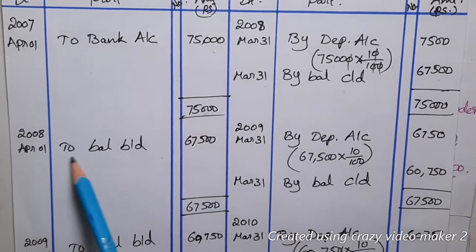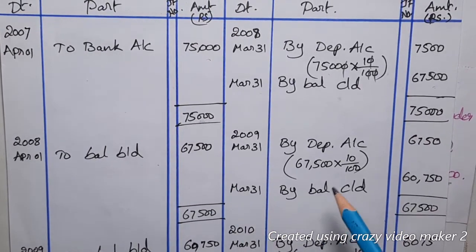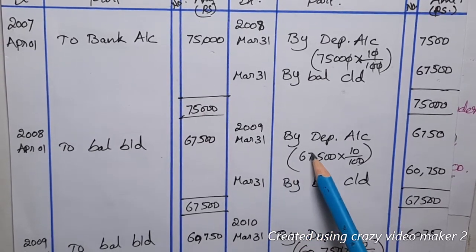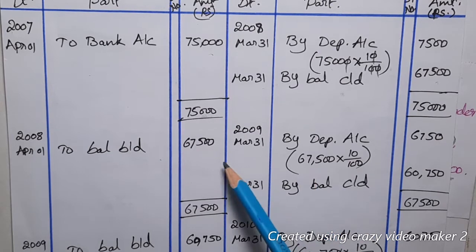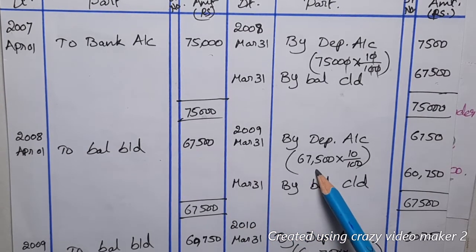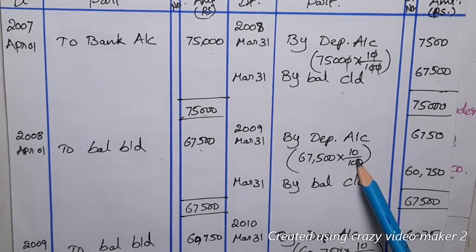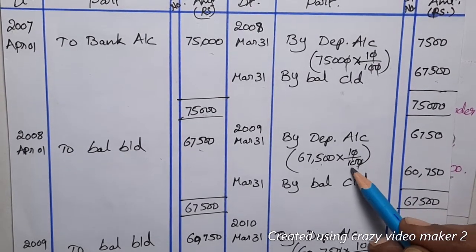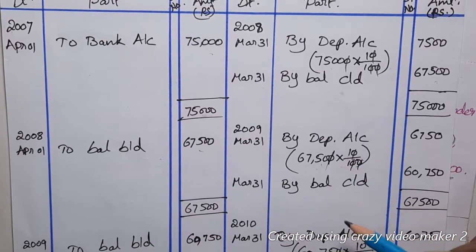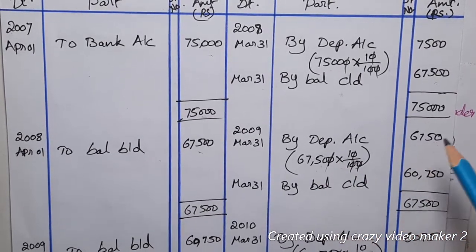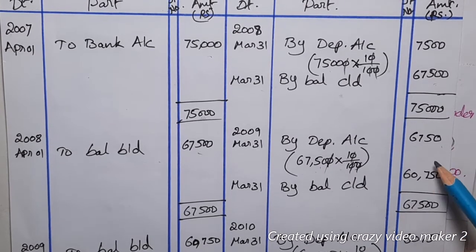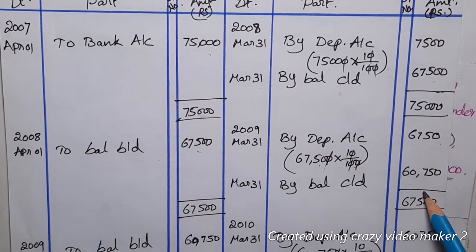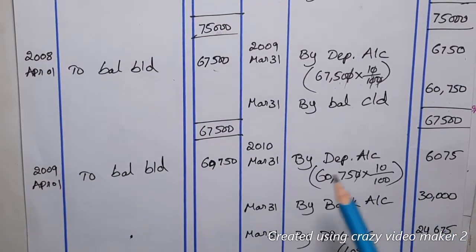In Year 2, the brought-down balance of ₹67,500 is carried forward. On March 31st 2009, we calculate 10% depreciation on ₹67,500, which is ₹6,750. After totaling and balancing, the closing balance is ₹60,750. This ₹60,750 is brought down to the next year.